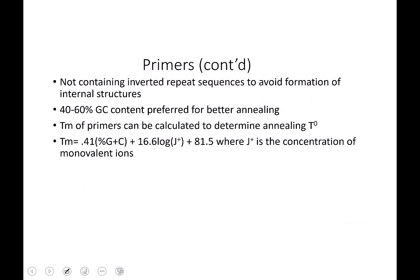This is just to avoid forming internal structures in your DNA. The general rule is that they should be 40 to 60% GC. If it's got too much AT, then it doesn't anneal well. The melting temperature of the primers is calculated. And you're going to actually program that into the PCR machine.